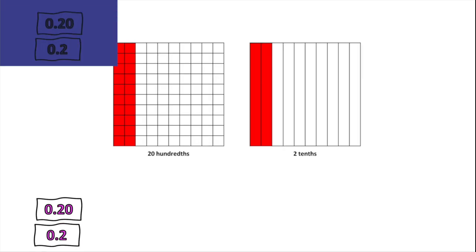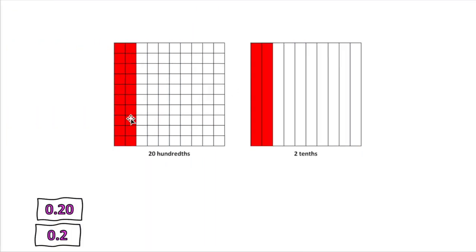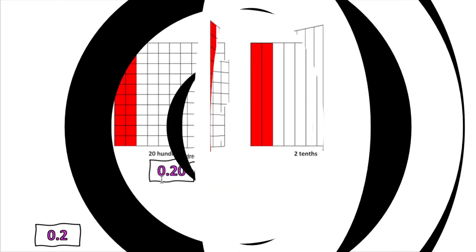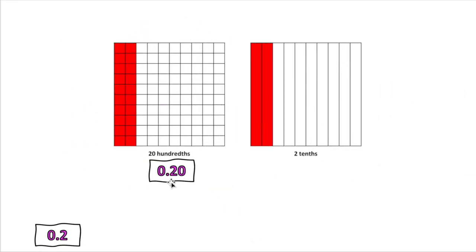Before we start, you need to know something very important. If you see this model, this model is 20 hundredths. If it was complete, it would be one whole. But we only see 20 out of 100 hundredths filled out, which means this is 20 hundredths.